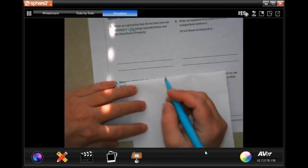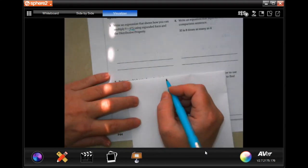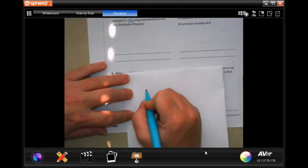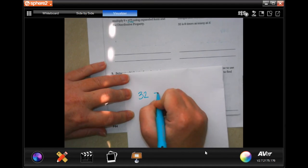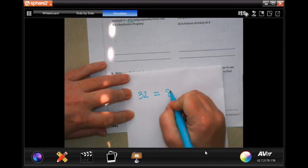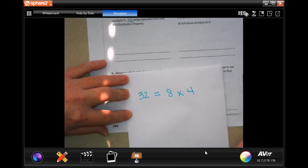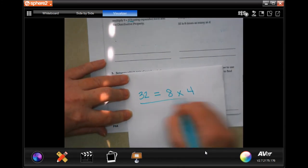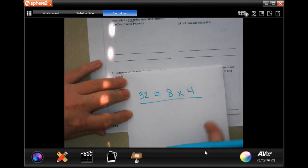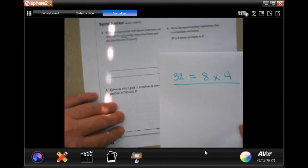Number 4 says write an equation that represents this comparison sentence. 32 is 8 times as many as 4. That's it, guys. You're done.